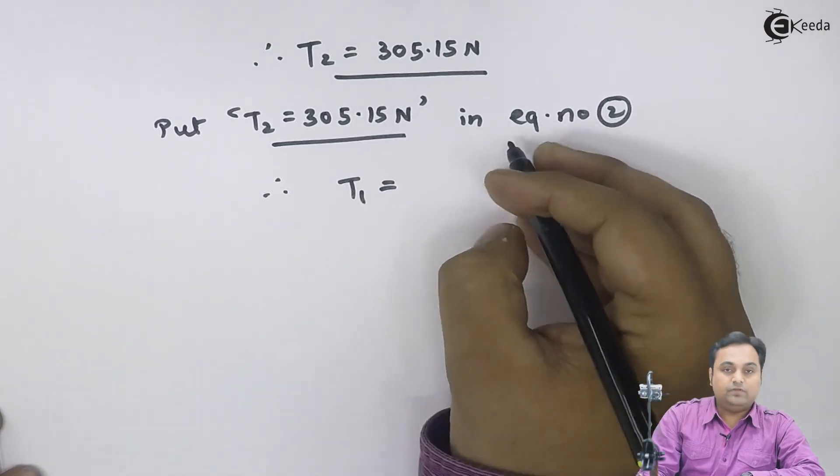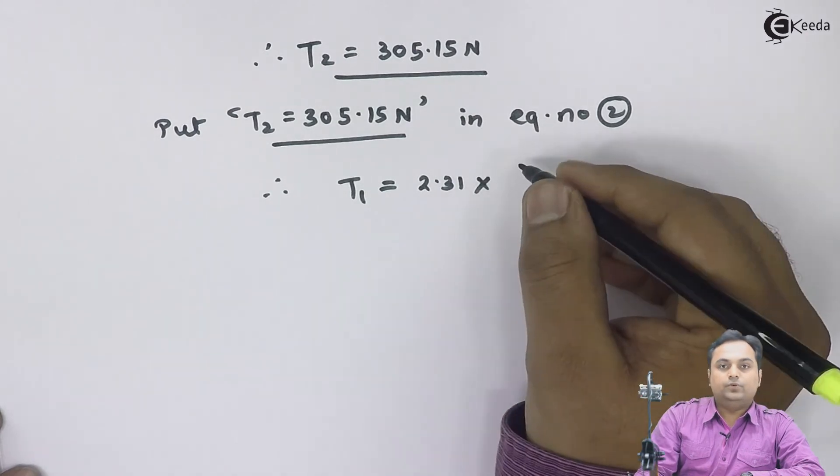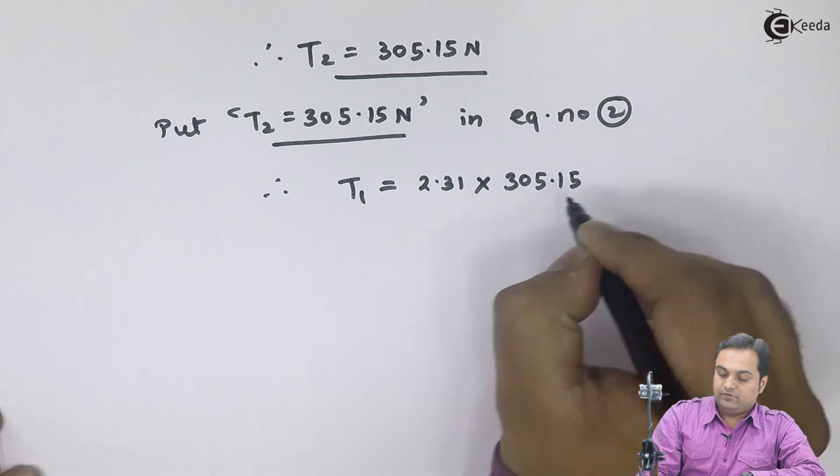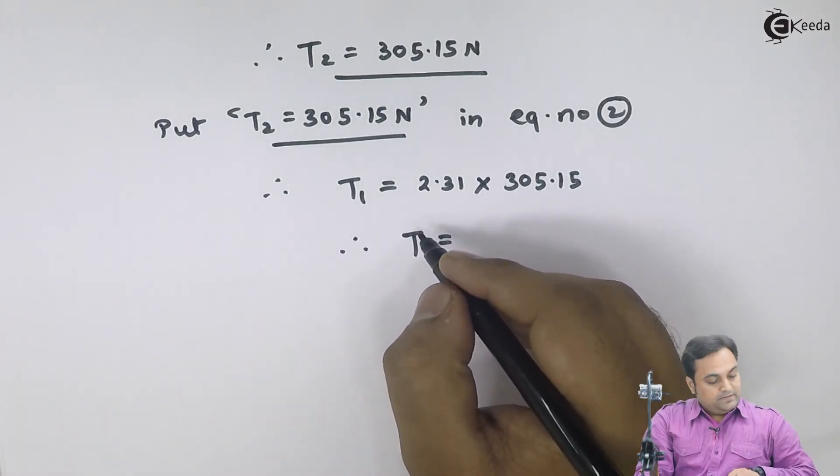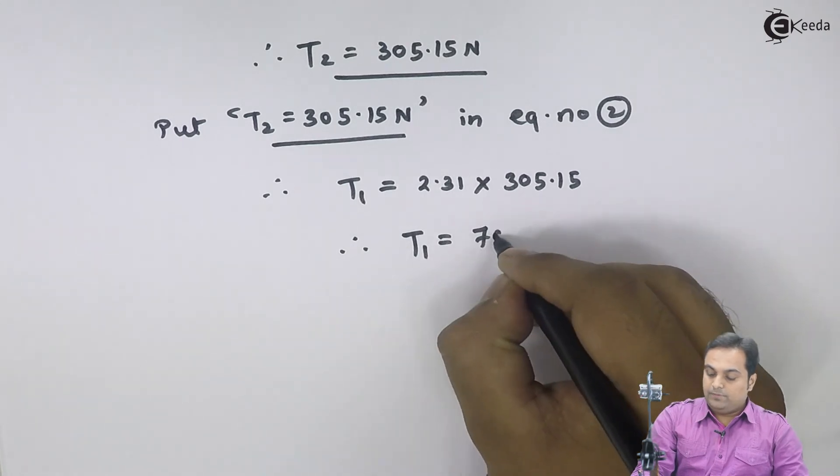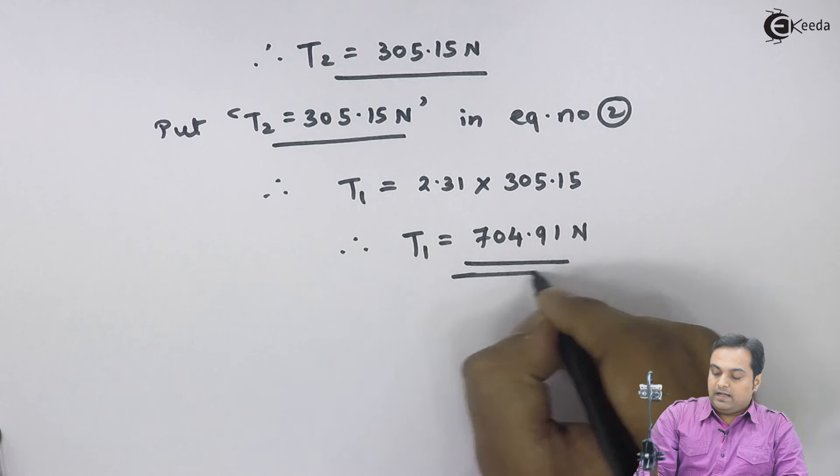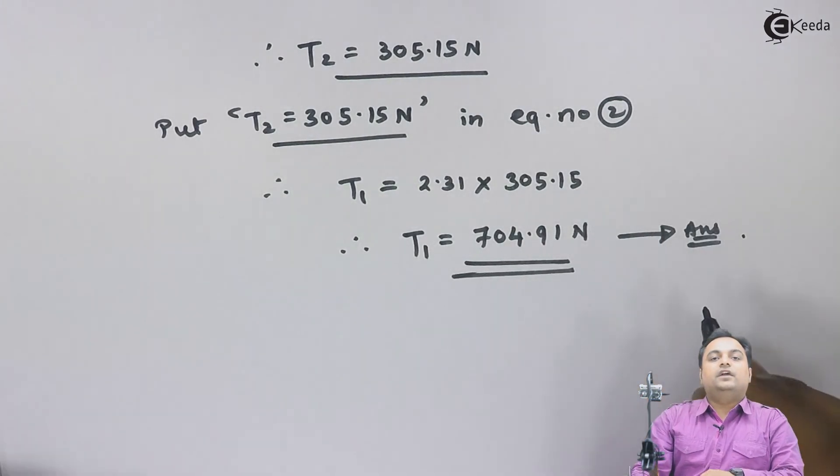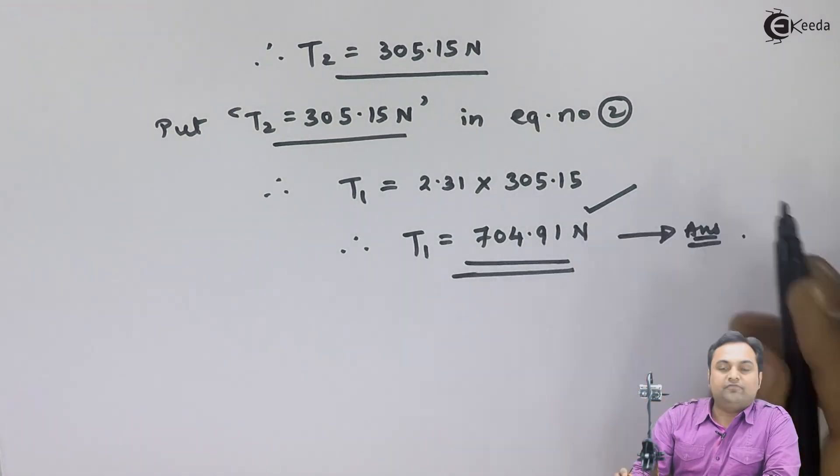Therefore, T1 equals 2.31 times T2 and T2 is 305.15. From this I will get the answer of T1 that is 704.91 Newtons. And this will be my final answer because in the question they have told to calculate maximum tension and T1 is the answer of maximum tension.